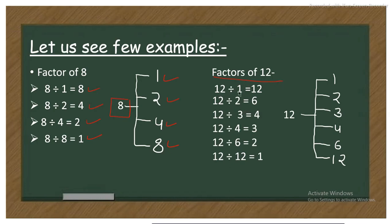Let us see another example — the factors of 12. When we divide 12 by 1 it gives 12, by 2 it gives 6, by 3 it gives 4, by 4 it gives 3, by 6 it gives 2, and by 12 it gives 1. So the factors of 12 are 1, 2, 3, 4, 6, and 12.